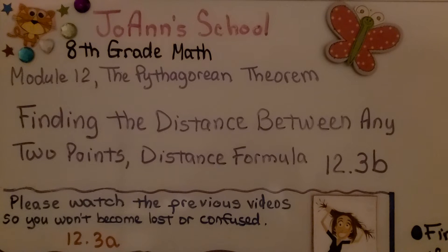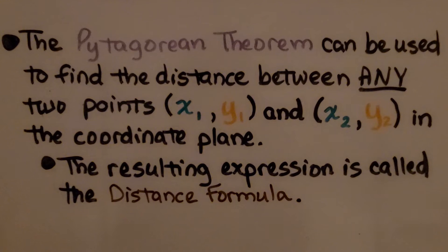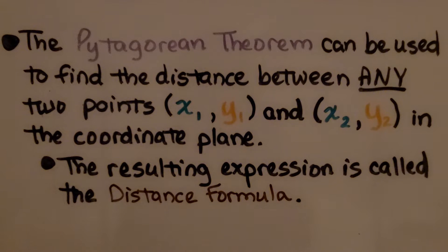Lesson 12.3b: Finding the distance between any two points — the distance formula. The Pythagorean theorem can be used to find the distance between any two points, x sub 1, y sub 1, and x sub 2, y sub 2, in the coordinate plane. The resulting expression is called the distance formula.